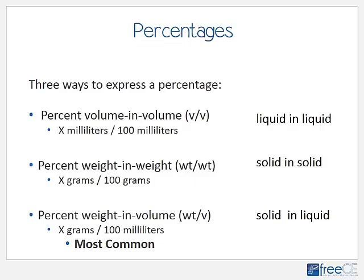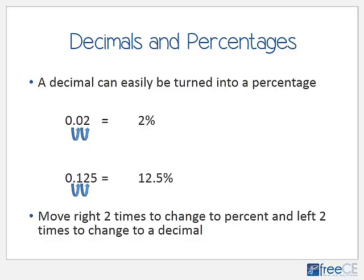Percent weight-in-volume is most commonly what you'll see — most solutions, suspensions, oral liquids, and even injectable and IV medications are expressed this way. When solving for unknown variables, we often need to convert between decimals and percentages. Any decimal can be turned into a percentage by moving the decimal two places to the right. For example, 0.02 becomes 2%, which makes sense — that's the hundredths spot, and 2% is 2 parts out of 100.